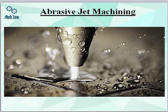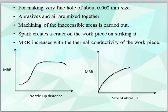Now we come to the last non-conventional process: abrasive jet machining (AJM). A nozzle produces a very high-pressure fluid which is forced through it and cuts or machines the workpiece. For making very fine holes of about 0.02 mm size, abrasive jet machining is used. Abrasives and air are mixed together and forced through the nozzle at very high speed.